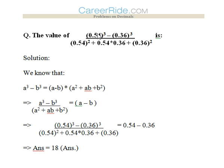We know that a³ - b³ formula is (a - b) × (a² + ab + b²).